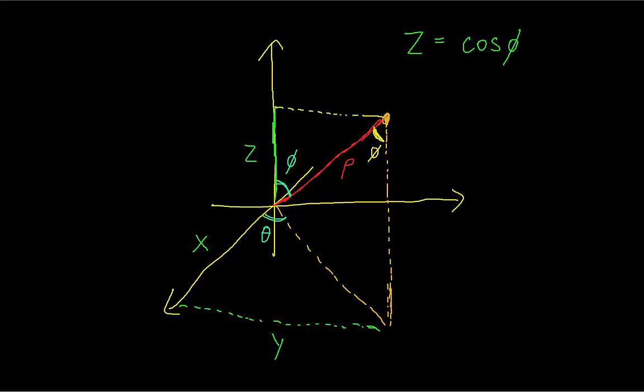And then to get x and y, it's helpful to first get this diagonal along the x-y plane. You can think of this as the ur from cylindrical coordinates. So you can see that this ur is going to be rho times sine of phi.